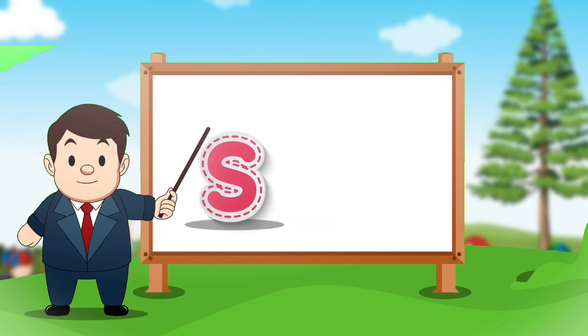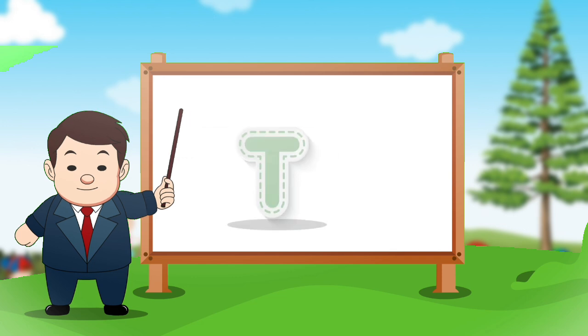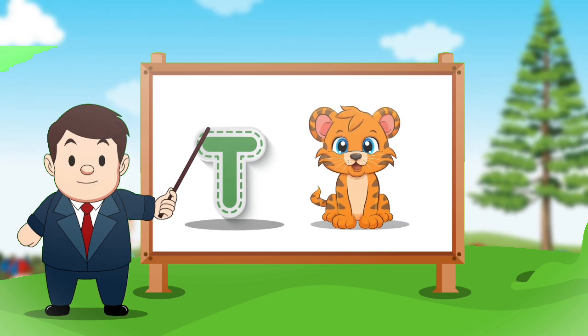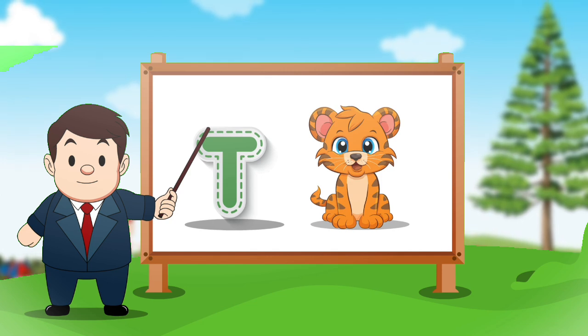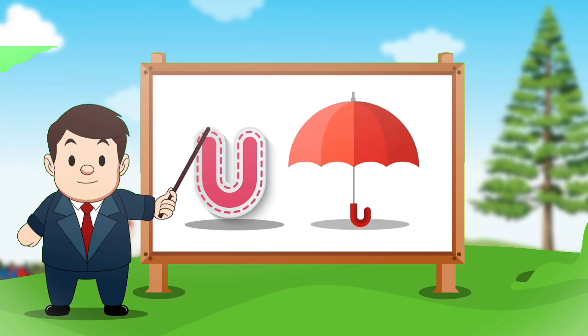S. S for sun. T. T for tiger. U. U for umbrella.